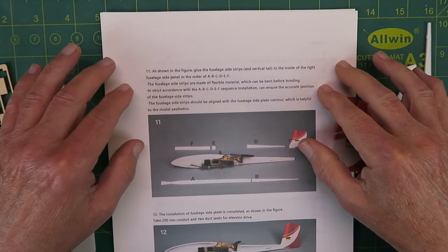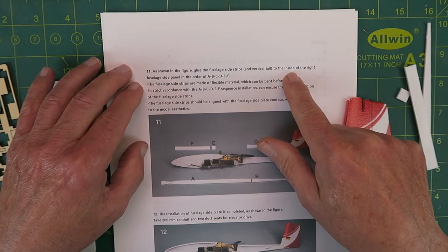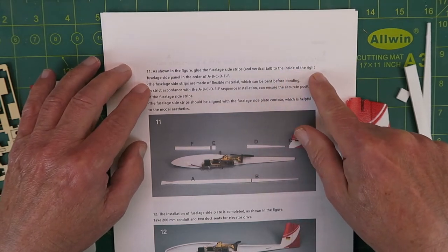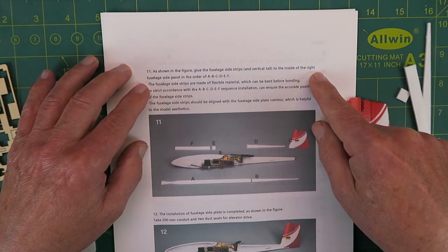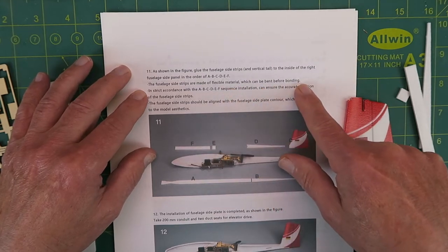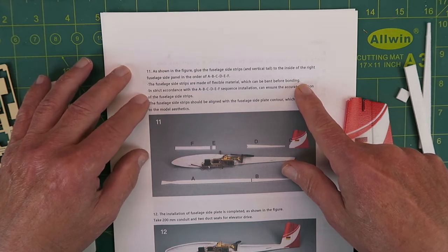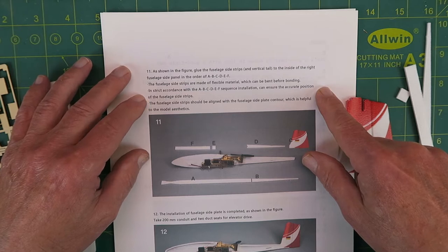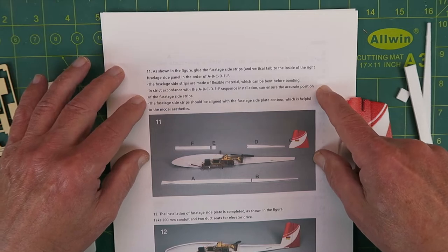The next step in the instructions was not at all clear to me. 'Glue the fuselage side strips and vertical tail to the inside of the right fuselage side panel in the order ABCDEF. The fuselage side strips are made of flexible material, no kidding, which can be bent before bonding. Strict accordance to ABCDEF sequence installation can ensure accurate position of the fuselage side strips.' What on earth is all that about?